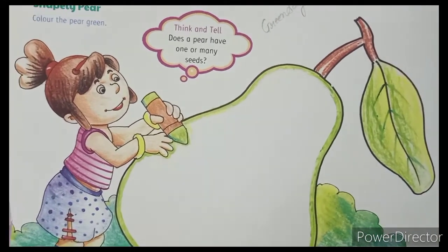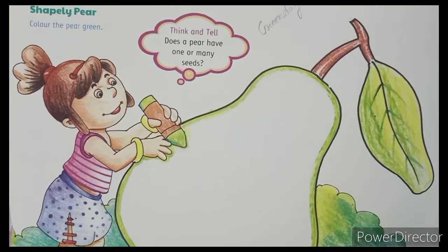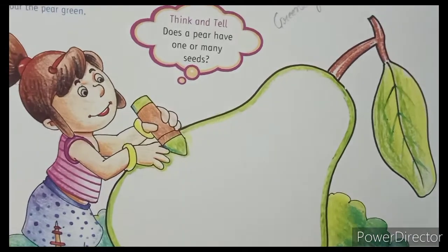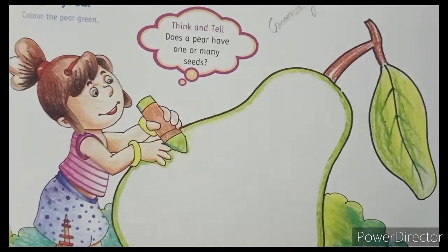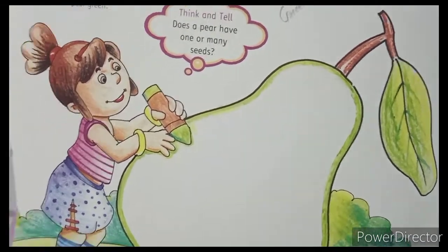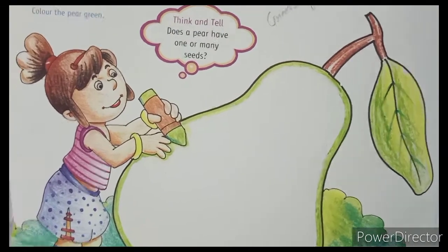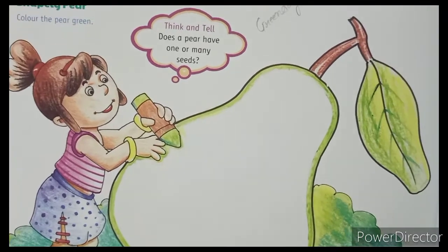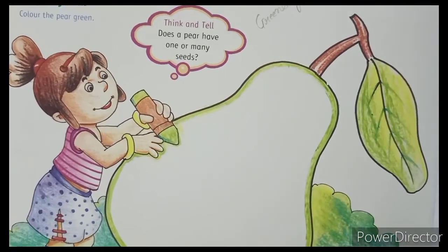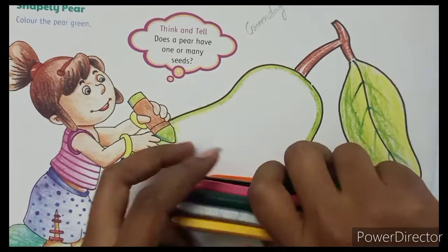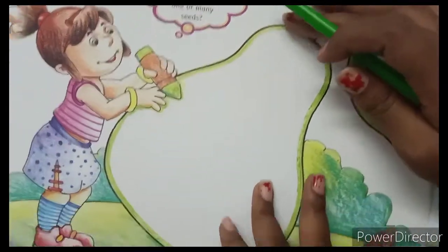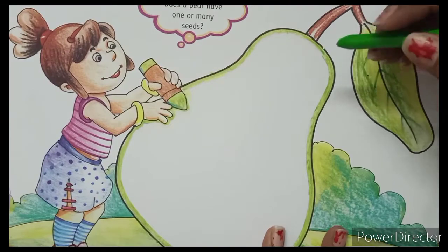Here we are going to use green color for the pear. All of you take your green crayon to color the pear. Let's take green color. This is the green color which we will be using to color the pear.